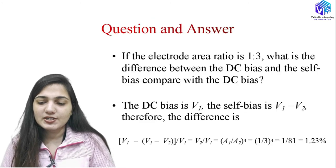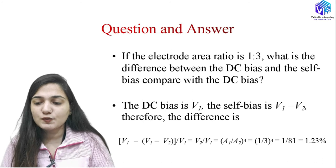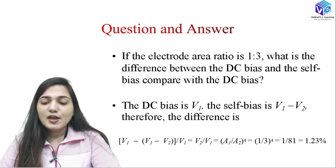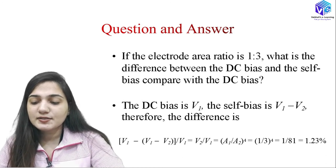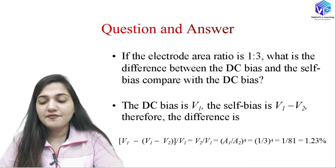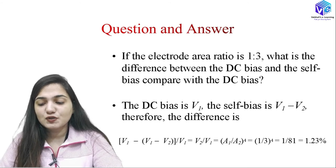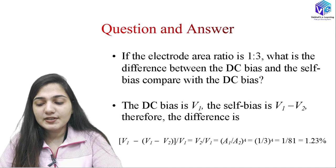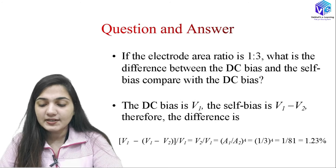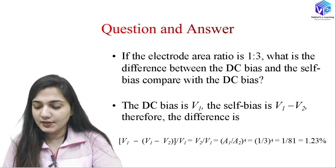Now a question: if the electrode area ratio is 1:3, what is the difference between the DC bias and the self-bias? The DC bias is V1 and the self-bias is V1 minus V2. If A1/A2 is 1:3, then V2/V1 equals (1/3) raised to the power of 4, which is 1/81 — approximately 1.23%.